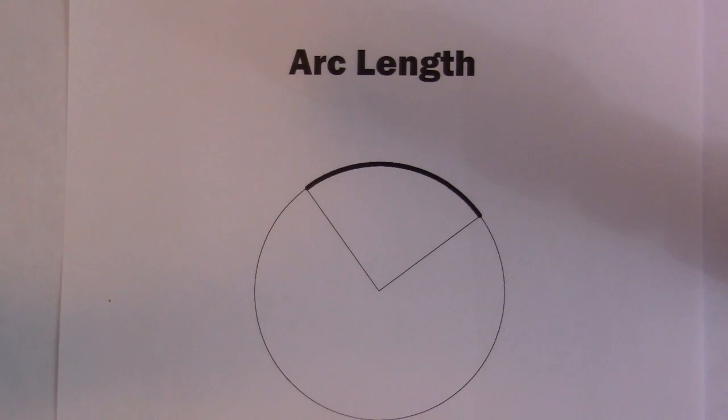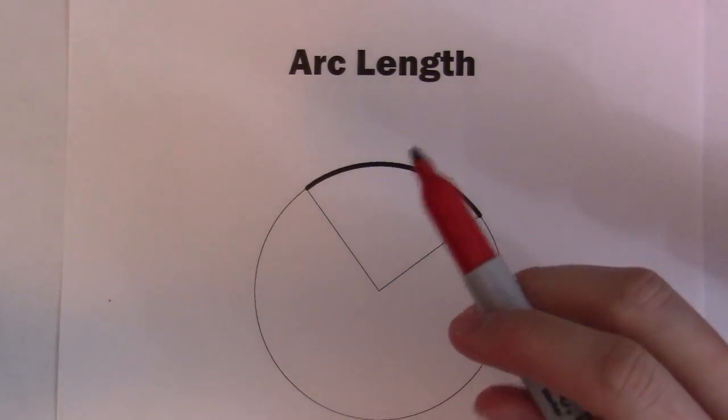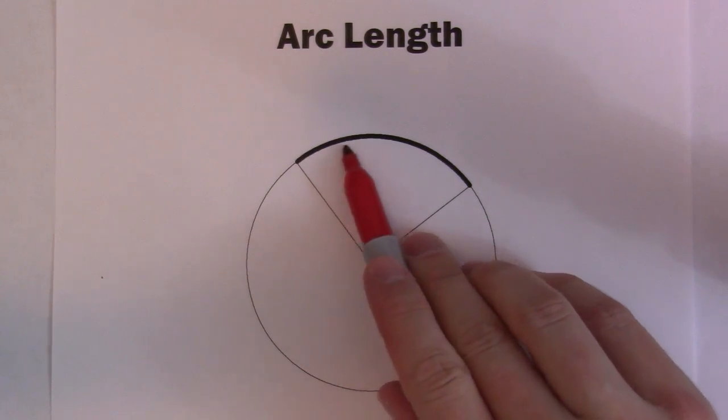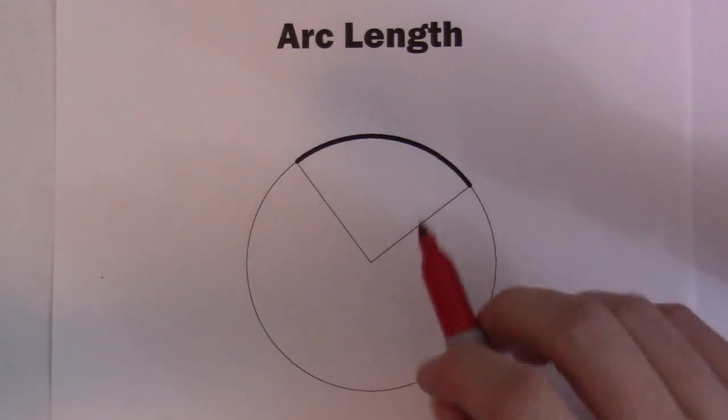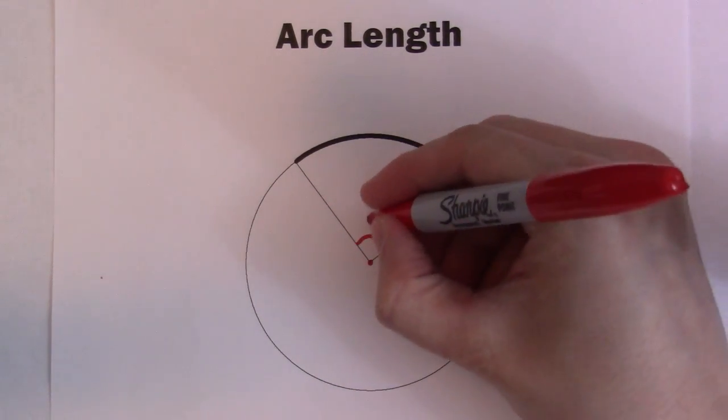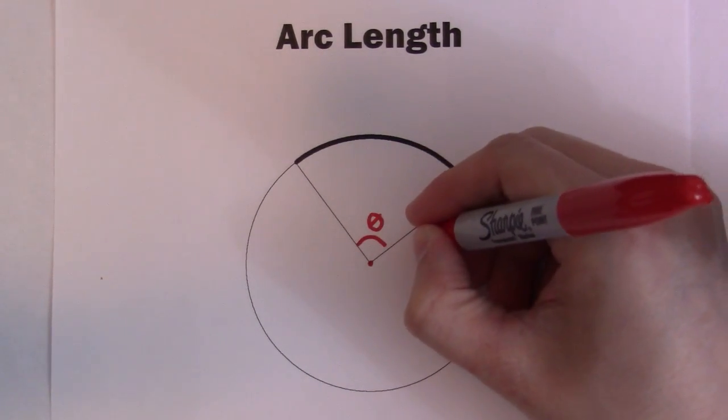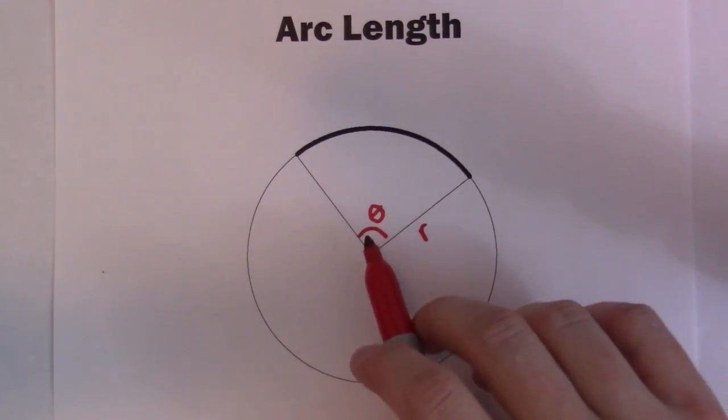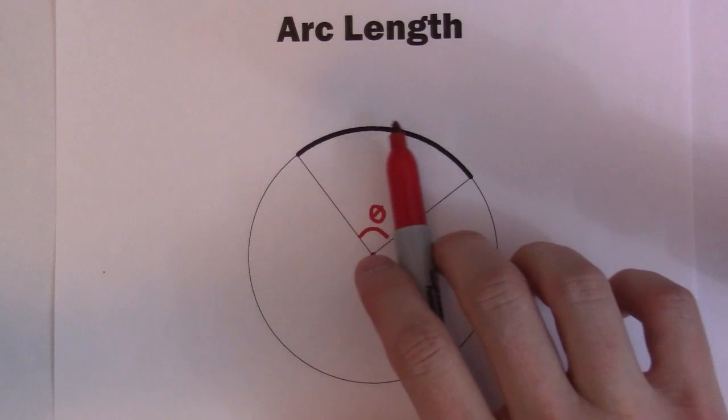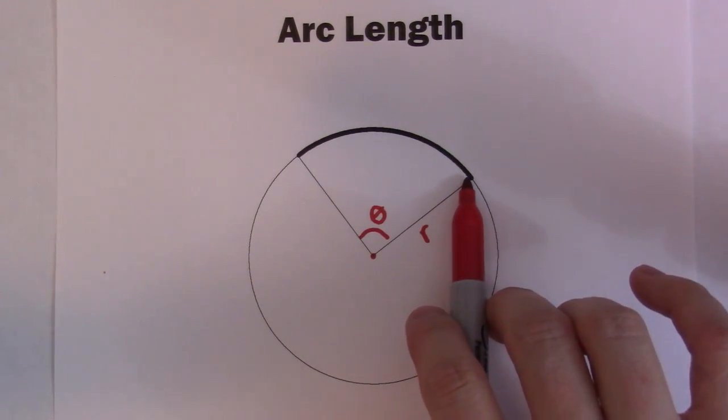In this video I'm going to explore finding the arc length of a circle. So the arc length is basically just some part of a circumference of a circle. So usually what ends up happening is you get a central angle theta and you're given the radius of the circle.